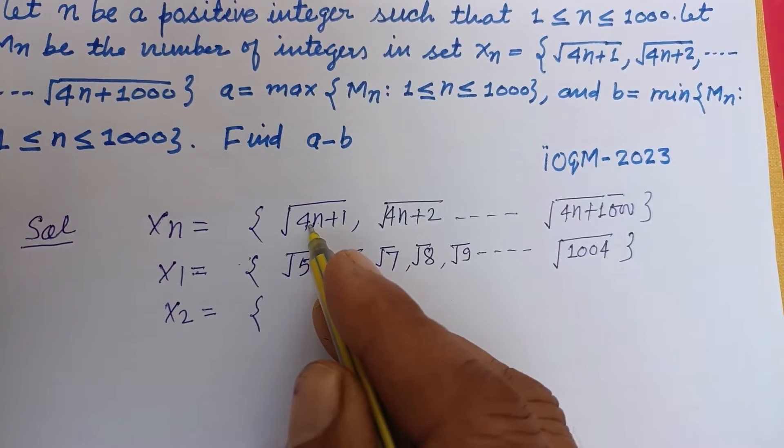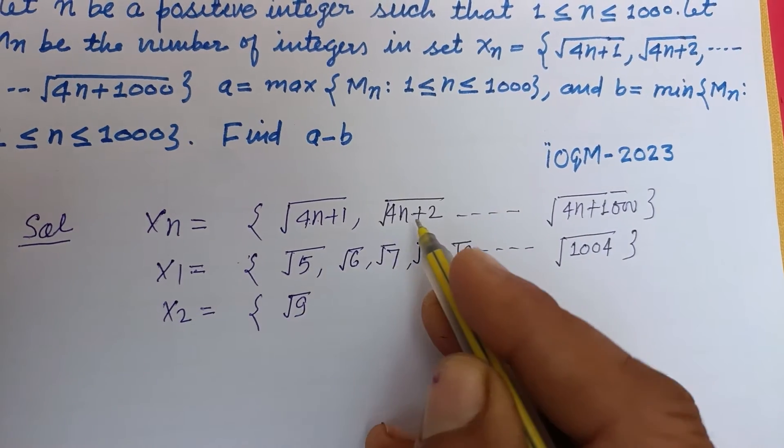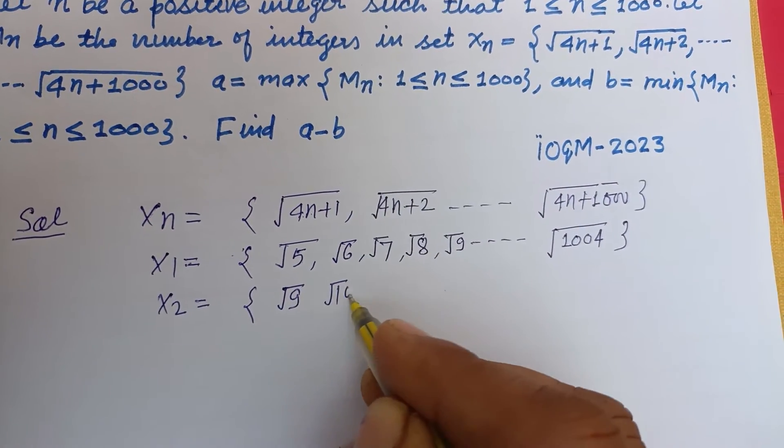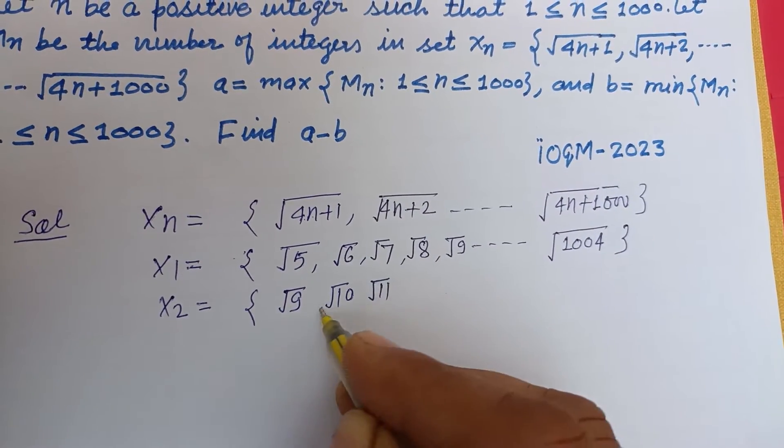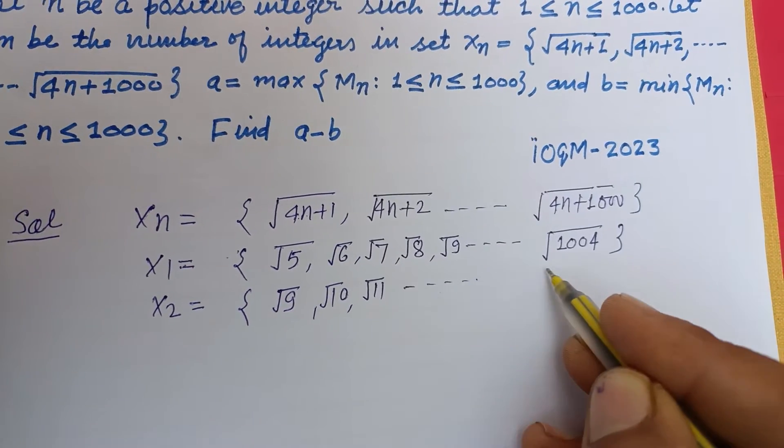X2, now we put n equal to 2: 2×4 is 8, so √9, √10, √11, and so on.